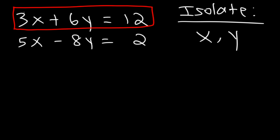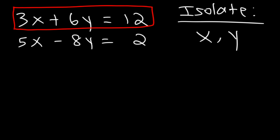It's always better to pick the variable with the lowest coefficient. 3 is less than 6, so it's easier to solve for x than y. If you try to solve for y, you're going to get a fraction, and it's best to avoid that. In the second equation, 5 and 8 are not multiples of each other, so it's best not to worry about that equation right now.